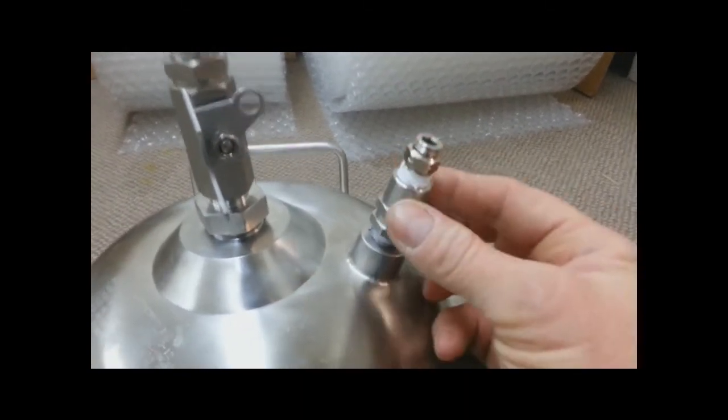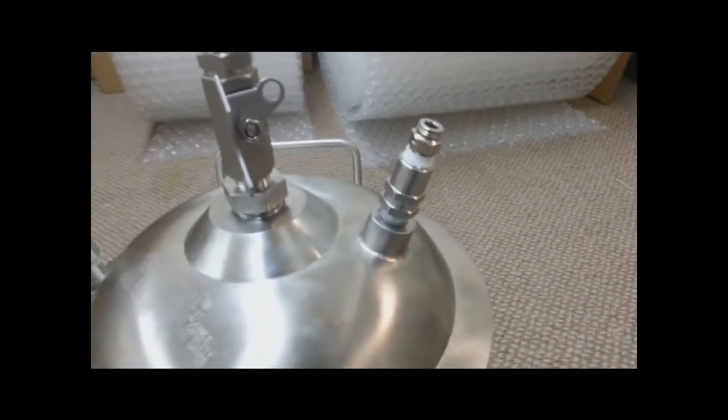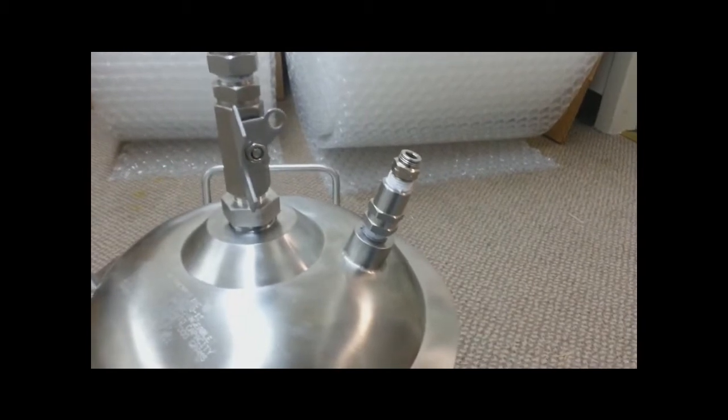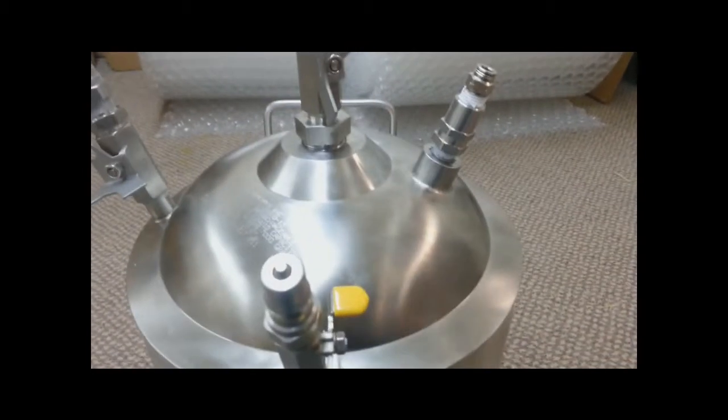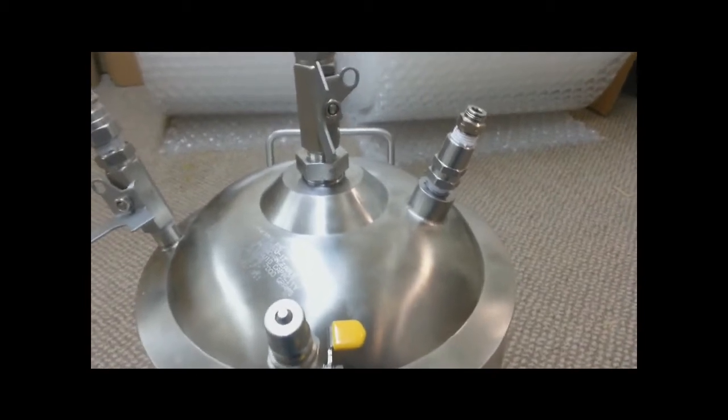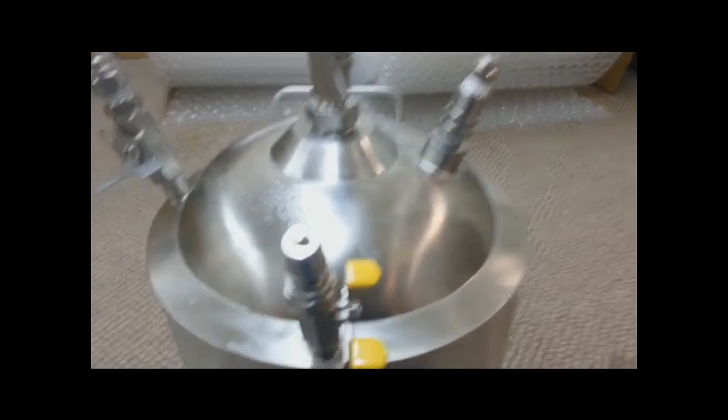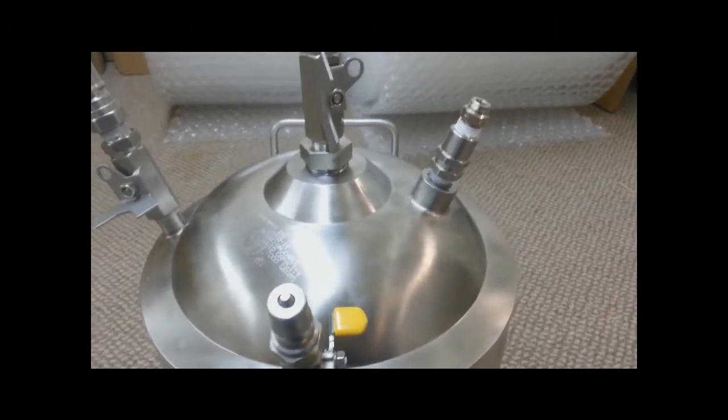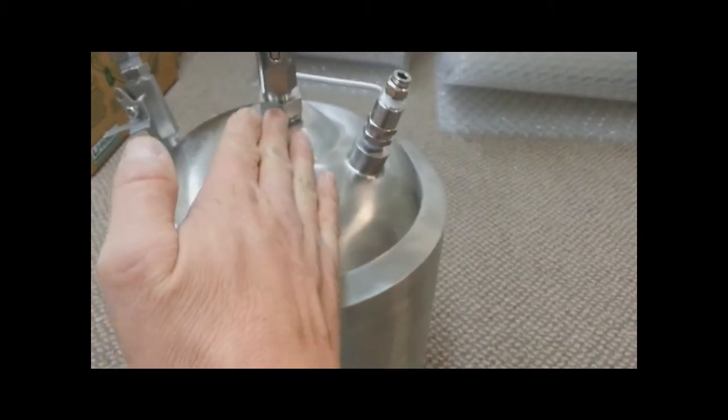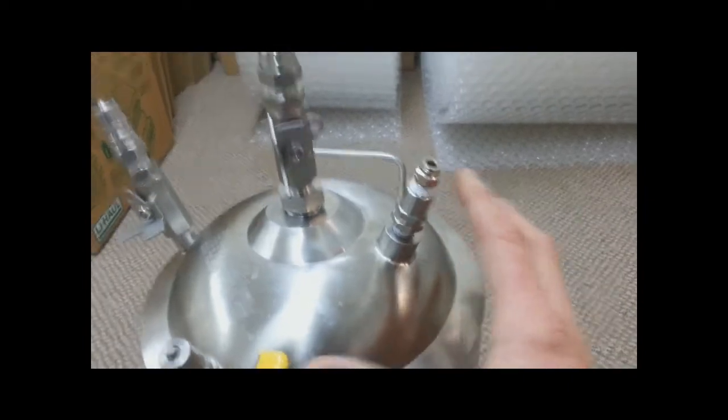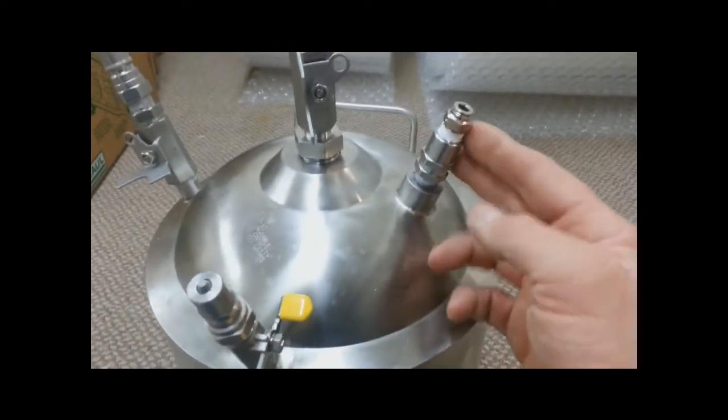The vented relief valve is set to crack at 125 PSI. There is no reason why at the type of temperatures that you're going to be extracting at that this tank would ever go above 125 PSI unless you exceeded the temperature drastically, like over 100 and way over 120 degrees, or the tank was completely full of liquid all the way to the top. There was no air inside and then the liquid was heated and expanded and the tank would rupture if this thing wasn't on here.